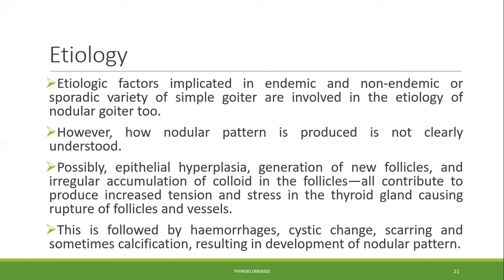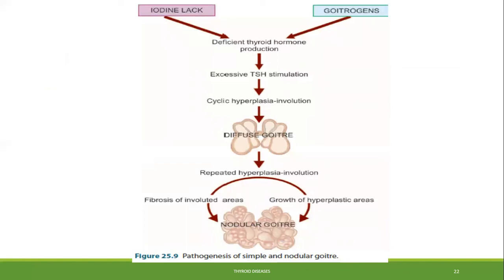The nodular pattern is not clearly understood, but it is thought that epithelial hyperplasia, generation of new follicles, and irregular accumulation of colloid in the follicles all contribute to produce increased tension and stress in the thyroid gland, causing rupture of follicles and vessels. This is followed by hemorrhages, cystic change, scarring, and sometimes calcification, resulting in development of the nodular pattern.